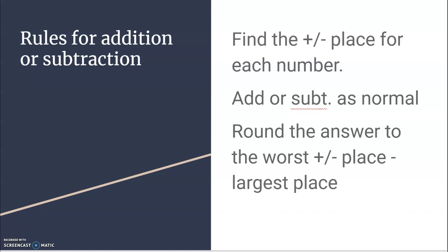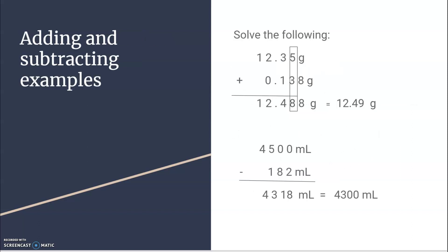Let's review the rules for addition or subtraction: find the plus or minus place for each number, add or subtract as normal, and then round the answer to the worst plus or minus place, which is the largest place. For example, adding 12.35 grams with 0.138 grams — this may happen in the lab if you weigh a sample on two different balances and want the total mass. Adding normally gives 12.488 grams, but 12.35 only goes to the hundredths place, so I round back to the hundredths.